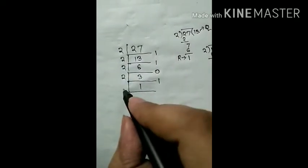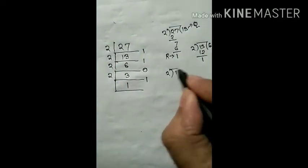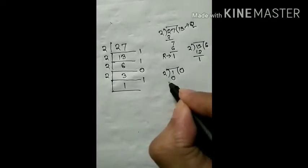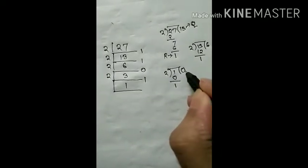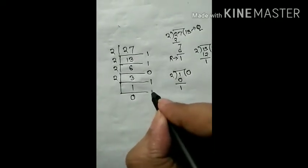Now 1, we have to divide 1 by 2. How? 2 times 0 is 0, so the remainder is 1 and the quotient is 0. Quotient will write here and remainder here.